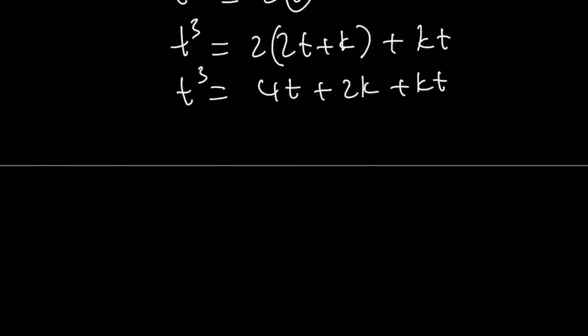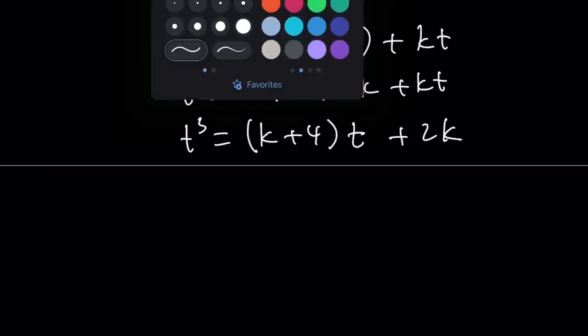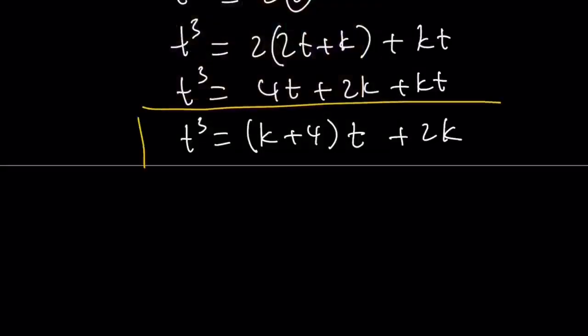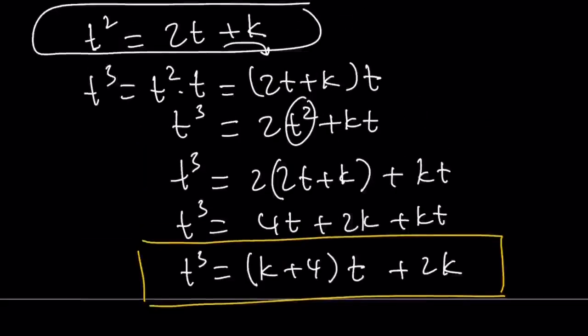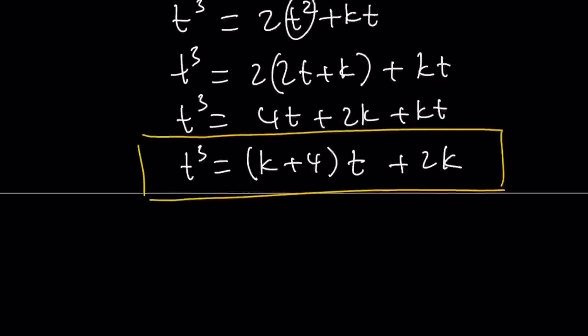Now, I want to get the coefficient of t. So I want to write this as k plus 4 as the coefficient of t times t plus 2k. Remember, k is a constant, t is the variable. And what was I able to do? Well, I was able to write t cubed in terms of t. And I need to find k. But I also know that t cubed equals 5t plus 2.